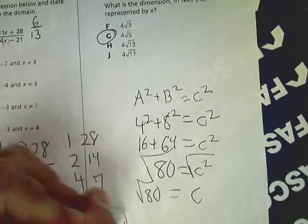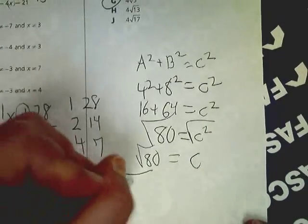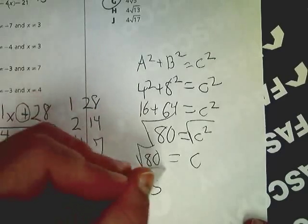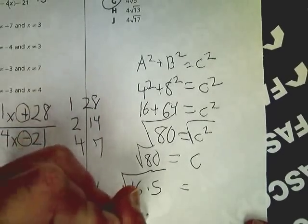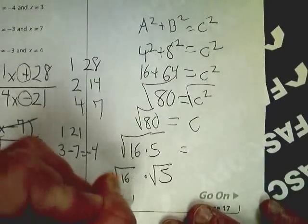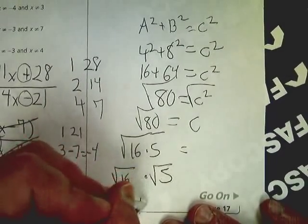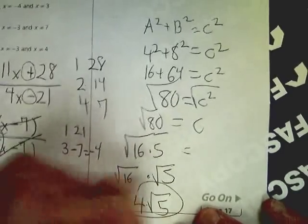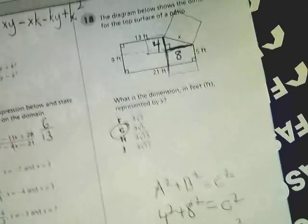So I'm going to do the square root of 80 becomes 16 times 5, and I'm going to break it down even further into the square root of 16 times the square root of 5. Well, I know that the square root of 16 is 4, and then I just tag this back on the end: 4 times the square root of 5. So that's the answer to number 18.